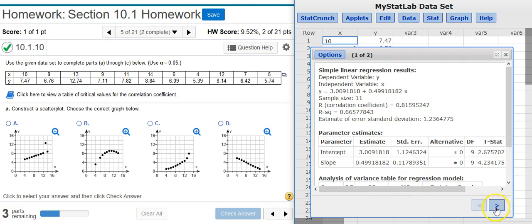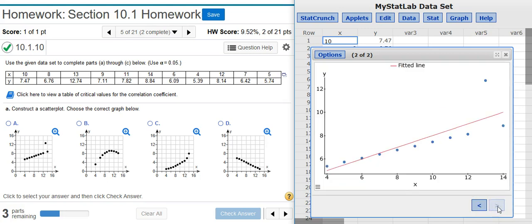The scatter plot is on the second page which we can get to by hitting this arrow key down here at the bottom of the window and voila! So now we just match the one that looks the same. Notice how the axes go from 4 to 14, 4 to about 13.